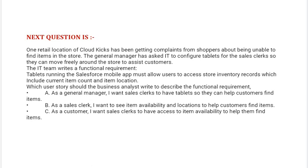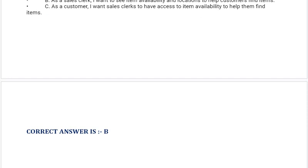Option A: As a general manager, I want sales clerks to have tablets so they can help customers find items. Option B: As a sales clerk, I want to see item availability and locations to help customers find items. Option C: As a customer, I want sales clerks to have access to item availability to help them find items. Correct answer is Option B.